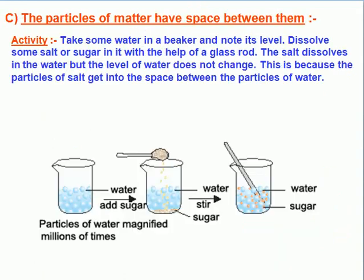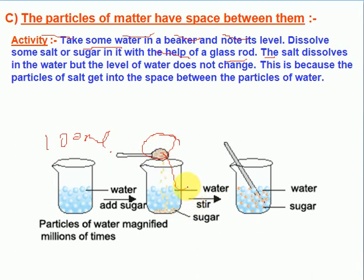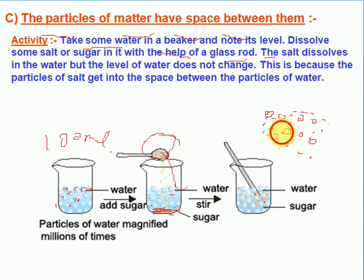The next physical property of matter is that the particles of matter have space between them. Same activity as before: take some water in a beaker — 100 ml — and add some salt. The particles of salt go into the spaces between the particles of water, showing that the particles of matter have space between them.